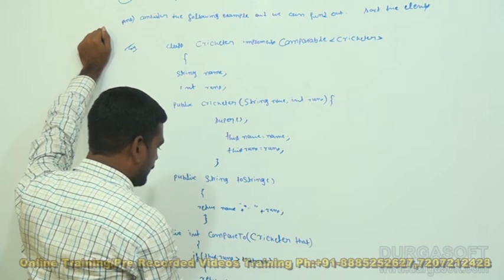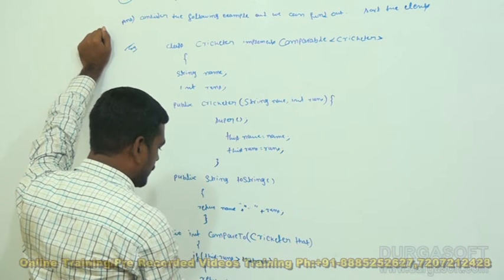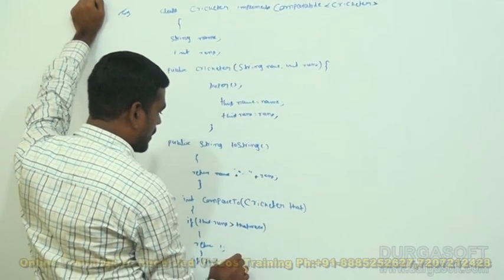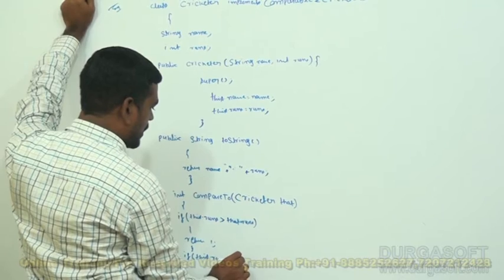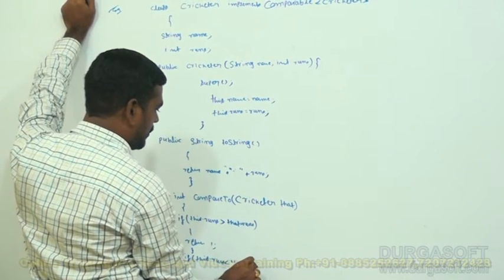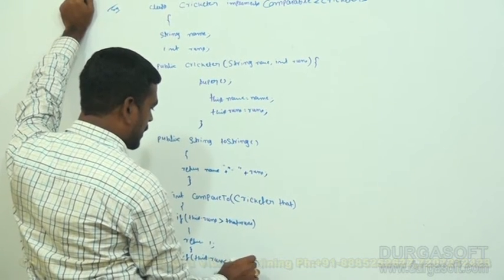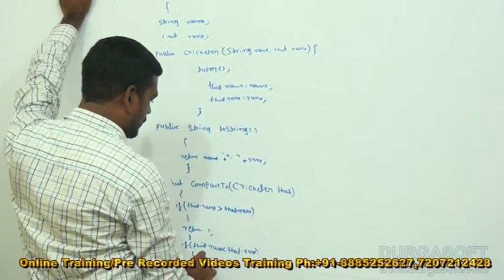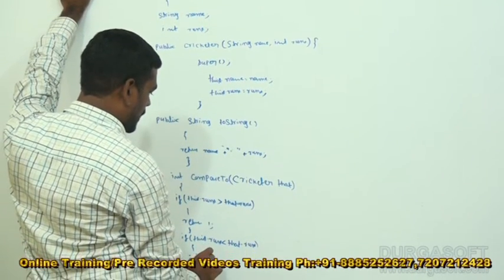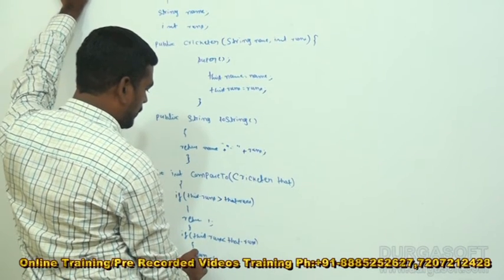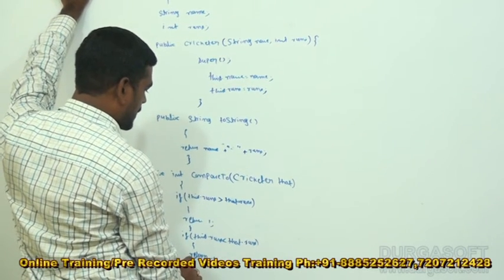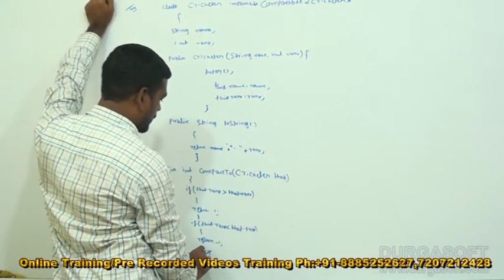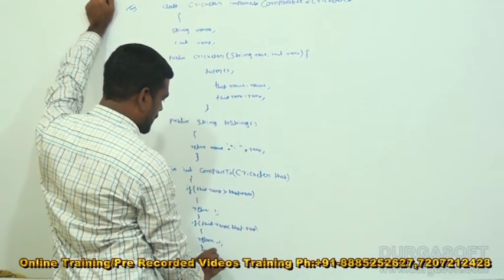If this.runs is less than that.runs, return minus one. Else return zero. Close the method.